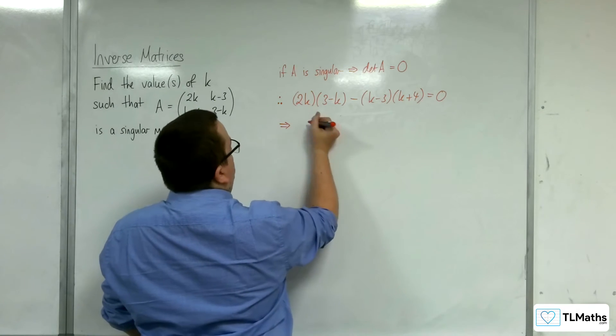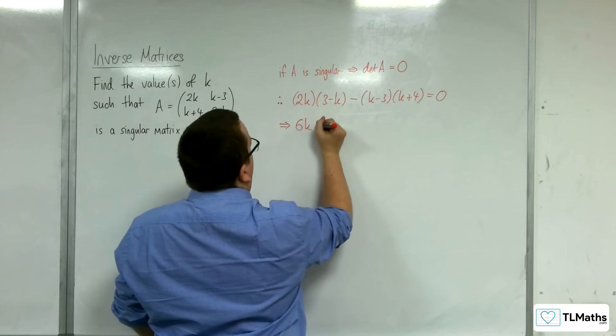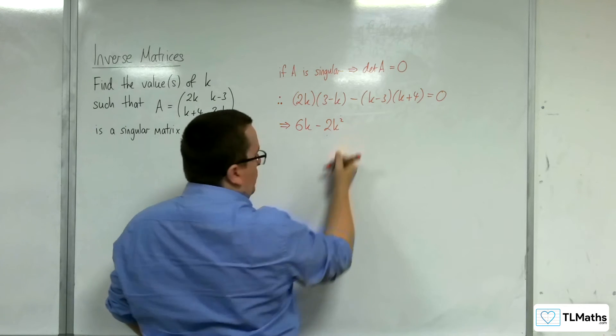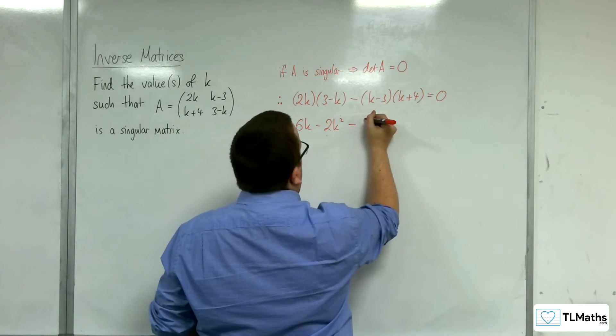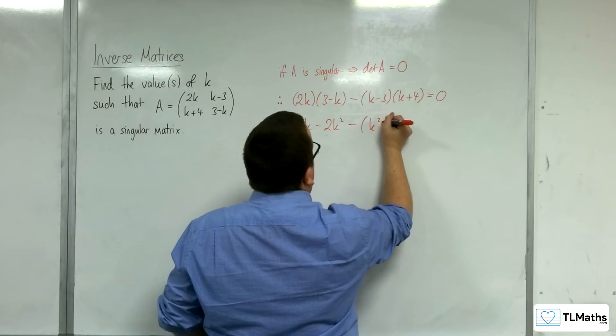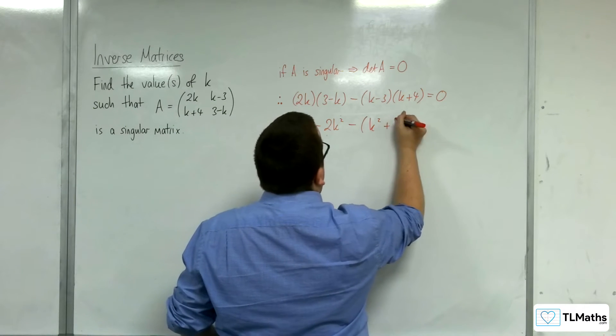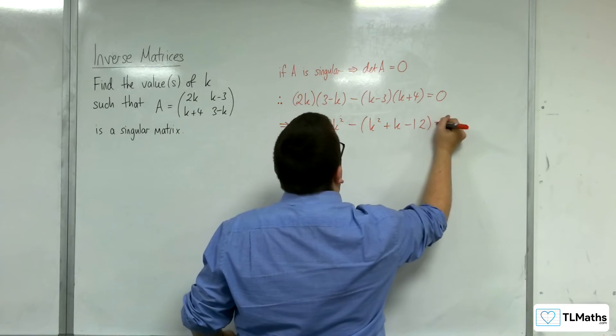So multiplying through, I've got 6k take away 2k squared. And then take away, let's put this in a bracket first. So k squared plus k take away 12 is 0.